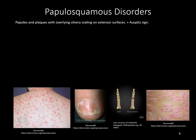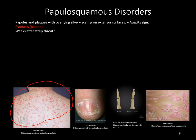A patient with papules and plaques with overlying silvery scale on extensor surfaces, with pinpoint bleeding when the scale is removed — a positive Auspitz sign — is most consistent with psoriasis, specifically plaque psoriasis. Another form, guttate psoriasis, occurs weeks after a sore throat or strep infection and presents with teardrop-shaped lesions on the back or trunk, occurring several weeks after group A strep throat.